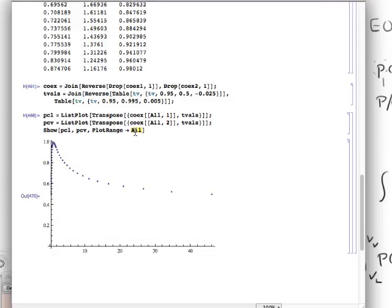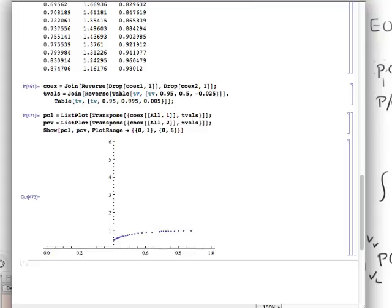If I want to blow this up so that I can see what's going on a little better I might choose a range for the pressure of 0 to 1 and for the molar volume 0 to, I don't know, 6 because the vapor one is getting very big. Oh, backwards.